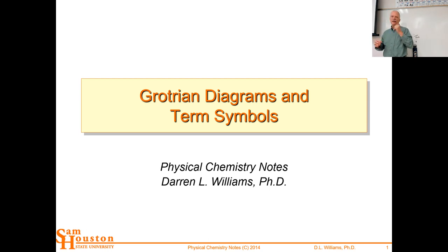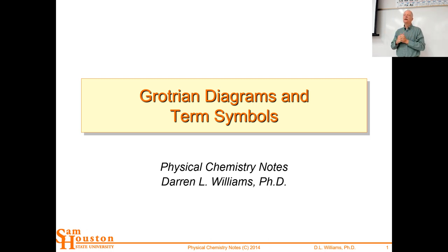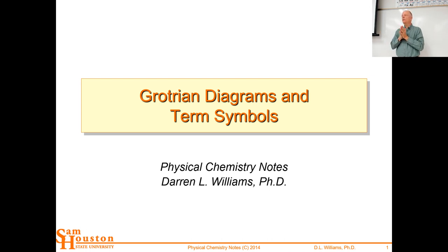Alright, so let's get started because we've got a lot to do today. Today is the Grotrian diagram and term symbols. So how do we keep track of all of these electrons? Each one of them has four quantum numbers, and each one of them being in an orbit that might have a magnetic spin to it, and the electrons have a little magnetic spin. This creates a fair bit of complexity whenever you're dealing with an atom, and where does that complexity show up? It shows up in the spectrum. Now atomic spectra are pretty simple, but if you want to understand the details, it can be kind of complex. One of the ways we keep track of those different energy levels and the different states of the atoms is by using term symbols.